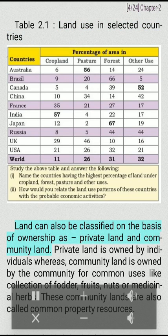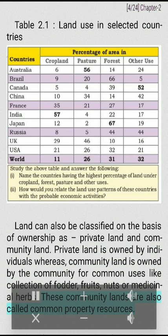Land can also be classified on the basis of ownership as private land and community land. Private land is owned by individuals whereas community land is owned by the community for common uses like collection of fodder, fruits, nuts or medicinal herbs. These community lands are also called common property resources.